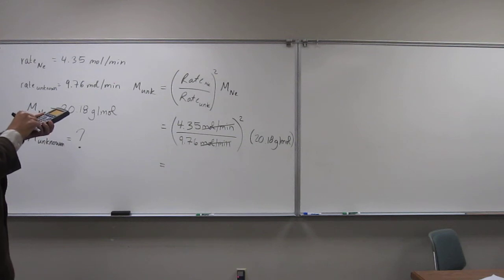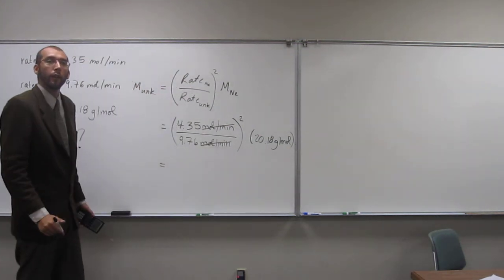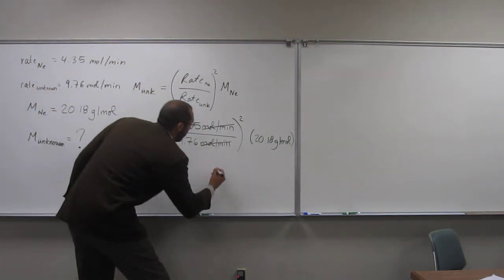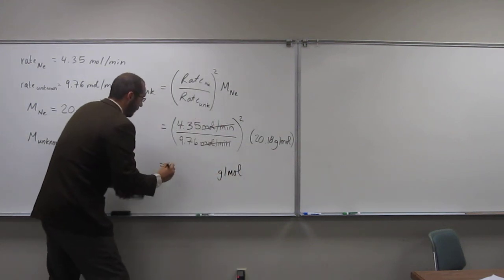Okay, so let's just plug into our calculator. 4.35 divided by 9.76 square, okay, times 20.18. So, what are units going to be here? Grams per mole. Yeah, grams per mole. And did anybody get the number? What did you guys get?